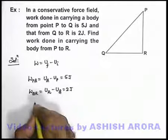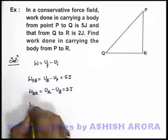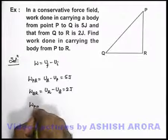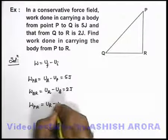We are required to find work done in carrying the body from P to R. So work done in going from P to R can be written as U_R minus U_P.